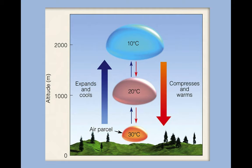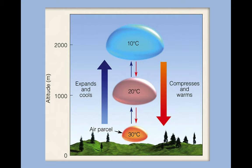Here's an image illustrating the lapse rate with a parcel of air. If this parcel of air were 30 degrees Celsius at the surface, as it rises, warm hot air cools and expands. As the air parcel rises, it cools and expands — here it's expanded and it's 20 degrees Celsius, and further up it's 10 degrees Celsius. The air molecules are further apart from each other. When cold air sinks, it warms as it goes down and compresses back to a smaller air parcel.